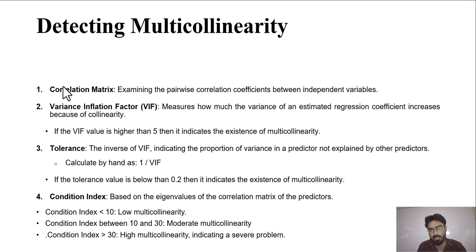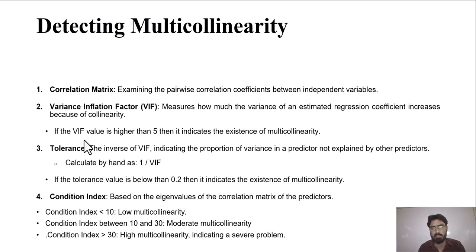When VIF is less than 5, it means there is no issue of multicollinearity in your dataset. But if VIF is greater than 5, then it means there is a moderate issue of multicollinearity. If VIF is greater than 10, then it might be the case of severe or high multicollinearity.